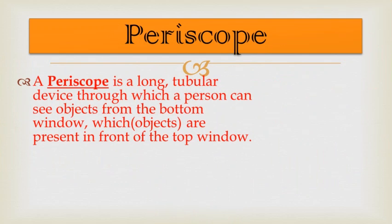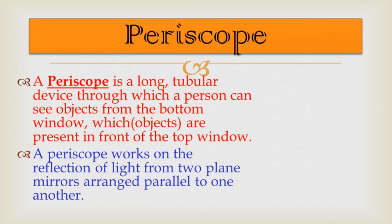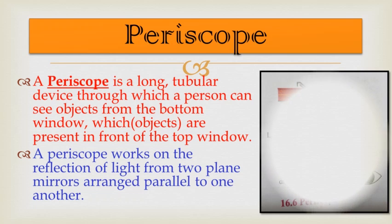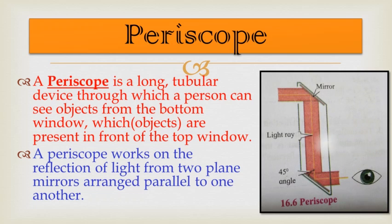Next is the periscope. A periscope is a long tubular device through which a person can see objects present in front of the top window from the bottom window. A periscope works on the reflection of light from two plane mirrors arranged parallel to one another.